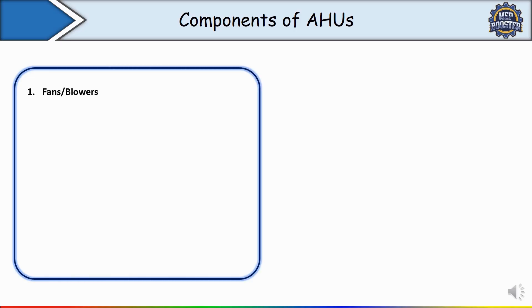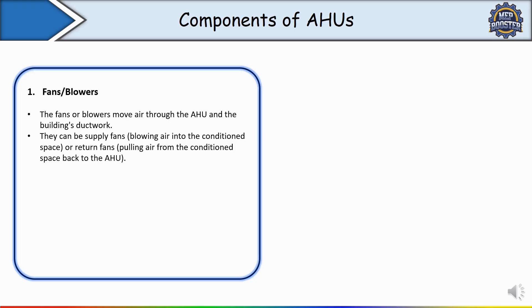The first component of the AHU is the fan or blower. The fan or blower moves air through the AHU and the building ductwork, circulating air throughout the ductwork, pushing it into conditioned spaces and returning it to the unit for further treatment. They can be a supply fan — blowing air into the conditioned space — or a return fan, pulling air from the conditioned space back to the AHU.